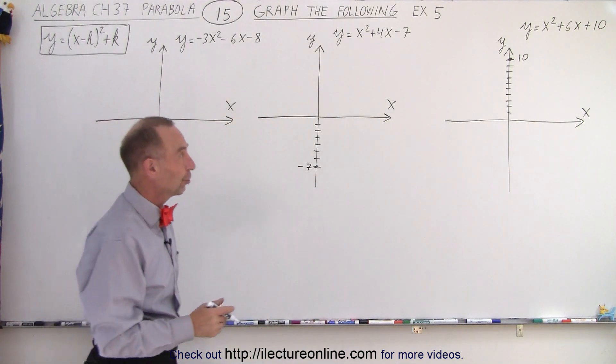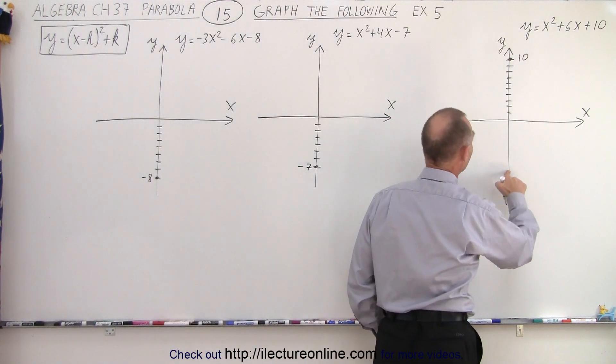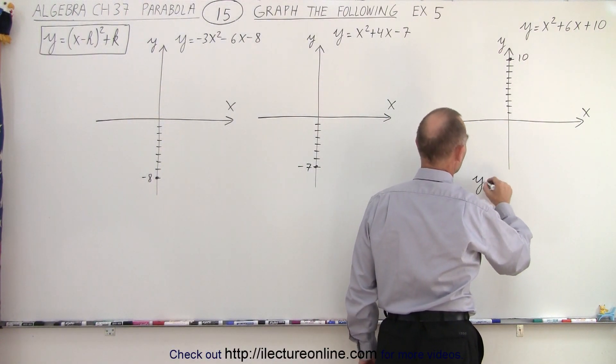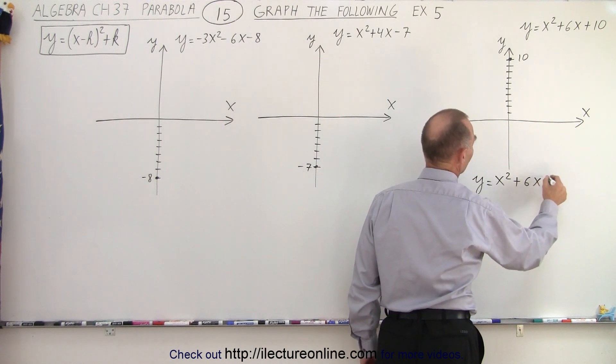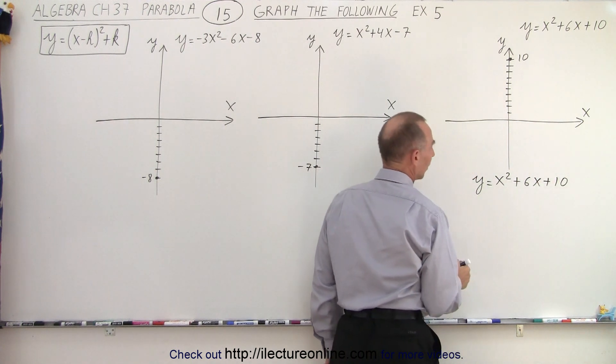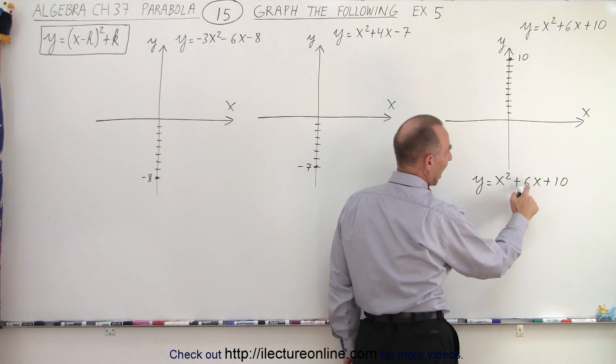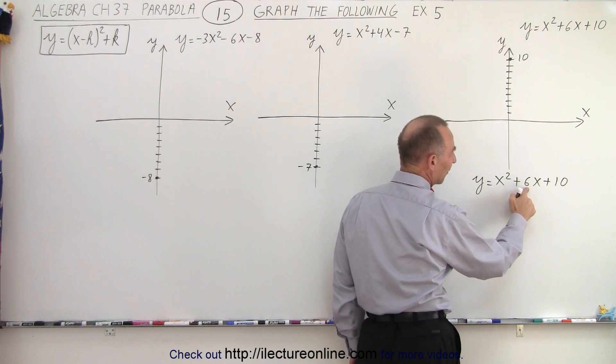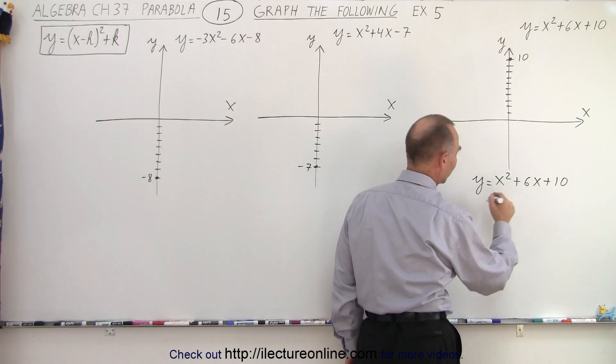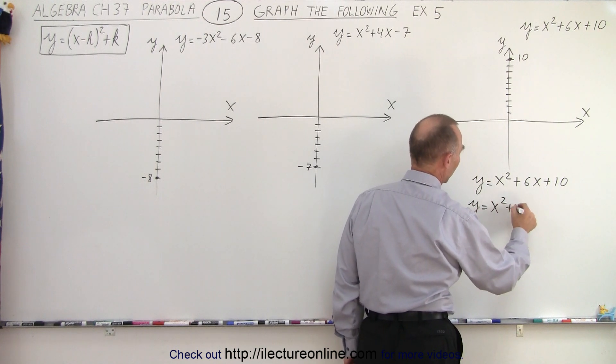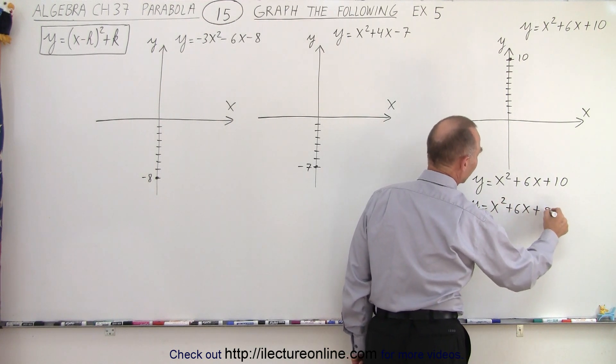So now let's do the conversion. Let me rewrite the equation here. We have y equals x squared plus 6x plus 10. So what we're going to do is take half of this and square it. So half of 6 is 3, squared is 9. So this becomes y equals x squared plus 6x plus 9.